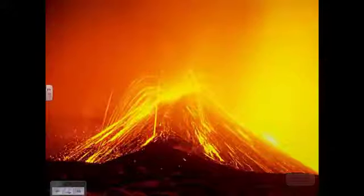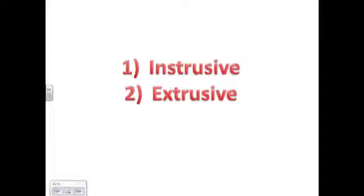And last but not least is igneous rock. So this is formed from magma. As the magma cools off into a hard rock, you have igneous. And there's two types: intrusive and extrusive. Intrusive means that the magma cools inside the earth. So it cools very slowly, giving plenty of time for crystals to grow large in the rock.